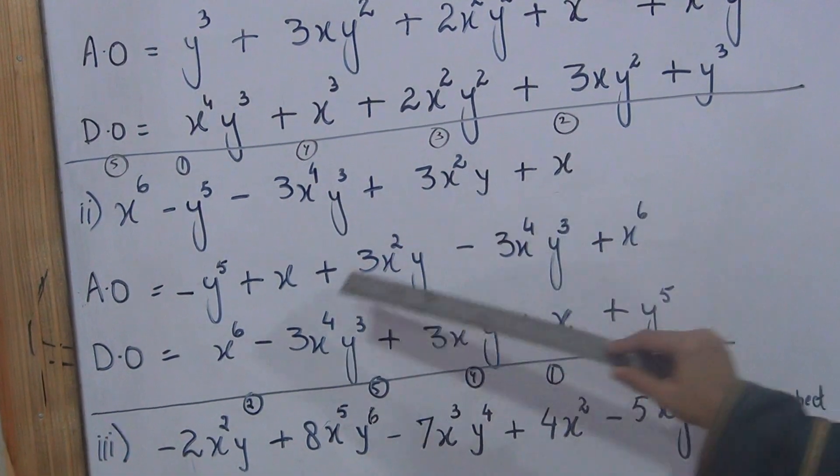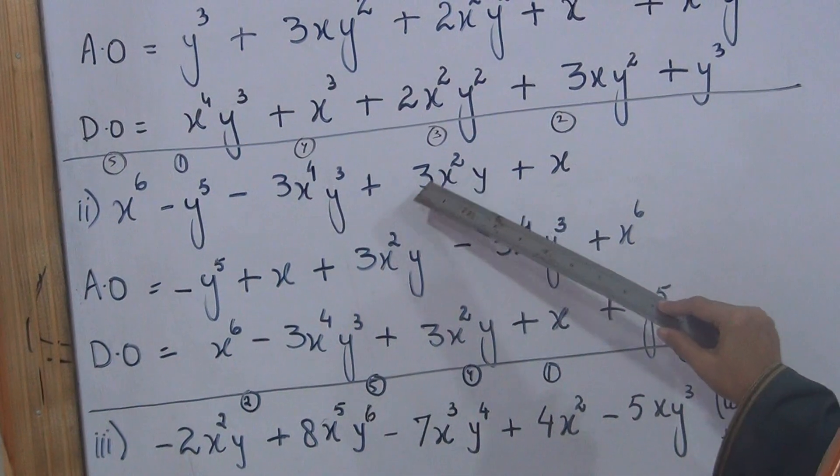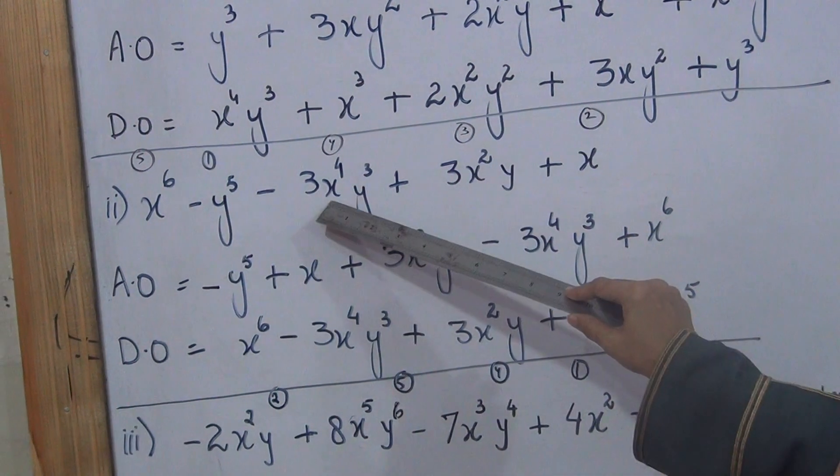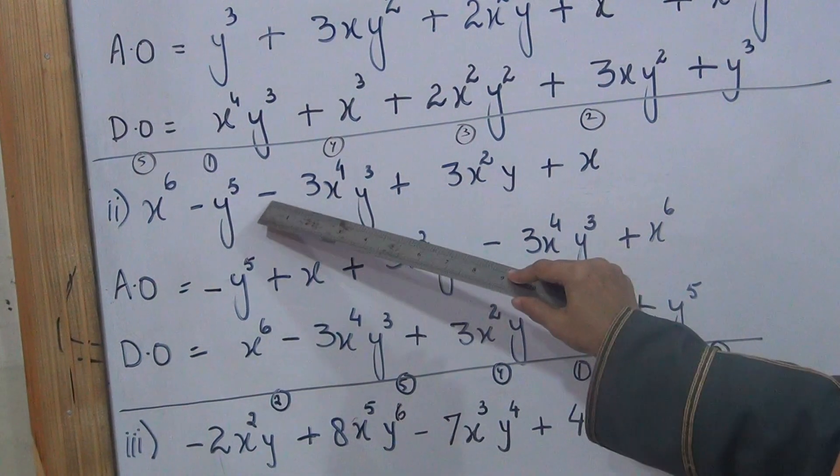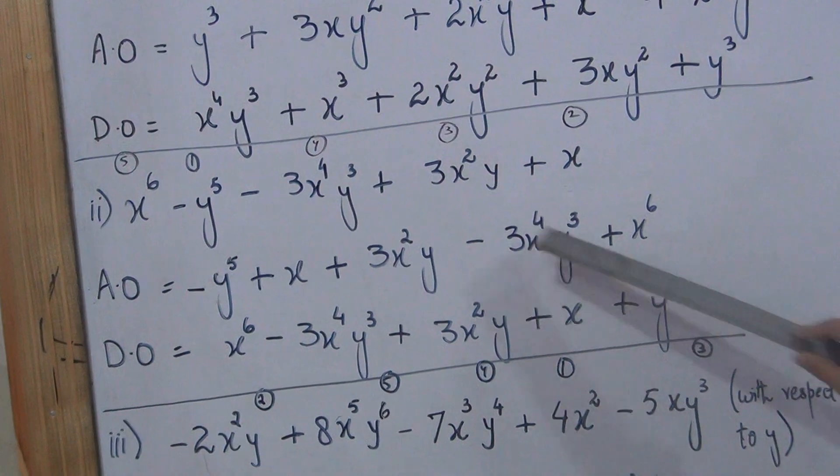Zero power is smallest, minus y5. Then one power, plus x. Then two power, three x square y. Three power is not there, four power is there. Minus three x power four y cube.